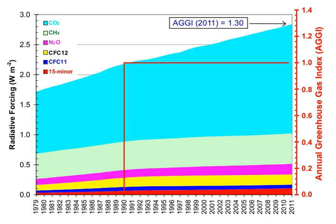Without greenhouse gases, the average temperature of Earth's surface would be about −18 degrees Celsius, rather than the present average of 15 degrees Celsius. The atmospheres of Venus, Mars, and Titan also contain greenhouse gases.